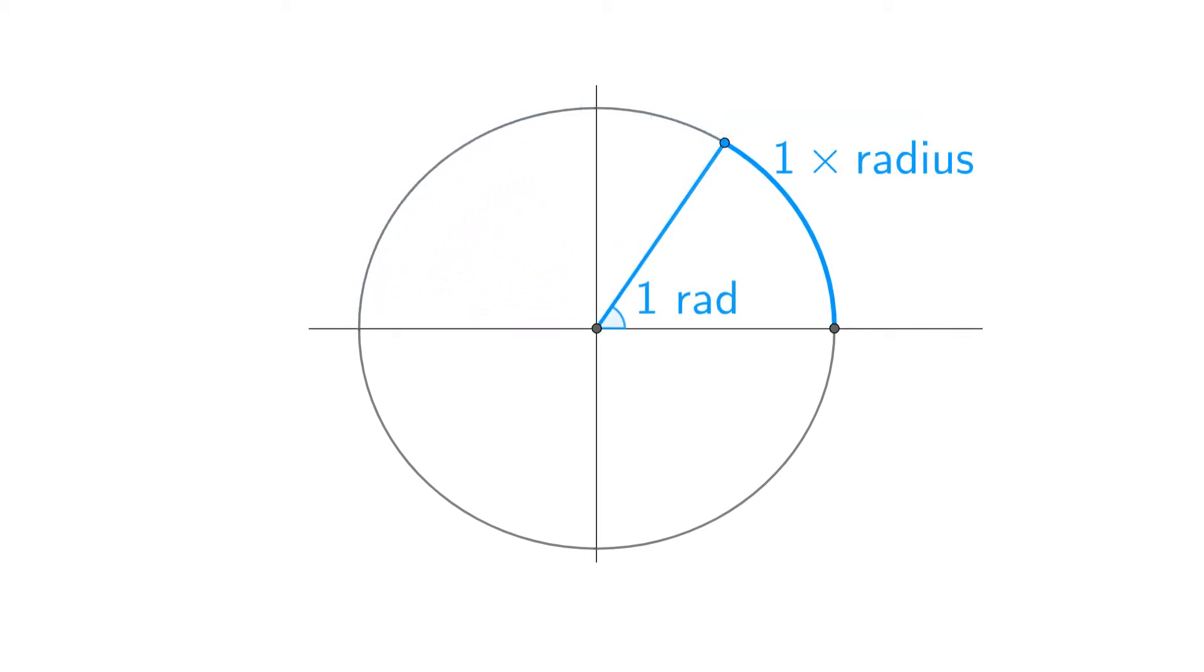1 radian would be the angle created by an arc of length 1 radius. But because we usually talk about radians in terms of π, this one is the key.